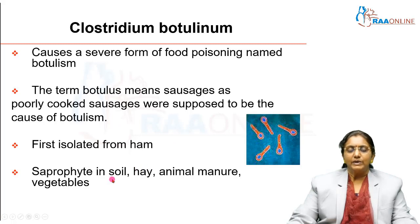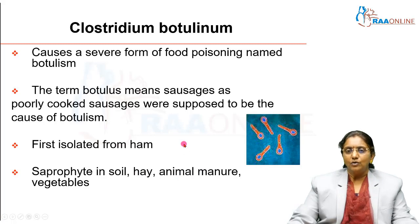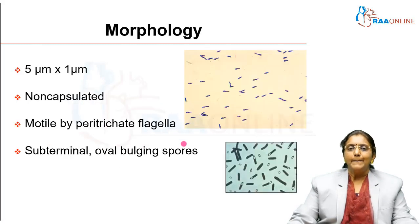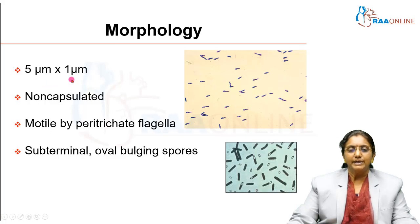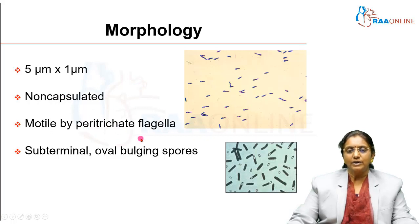It is present in the environment — it is a saprophyte, meaning it grows on dead, decaying organic matter. It can be present in soil, hay, animal manure, and vegetables. It is an anaerobic gram-positive spore-forming bacillus, about 5 microns in length and 1 micron in thickness, making it quite a long and stout bacillus. It has no capsule but has flagella in a peritrichate arrangement — all around the bacterial body — and is therefore motile.